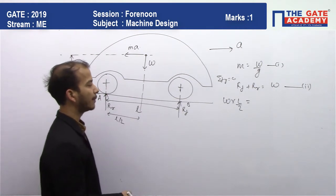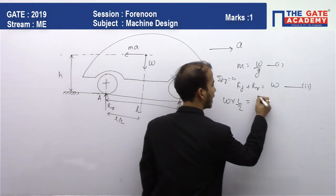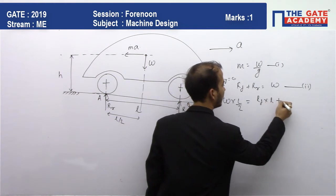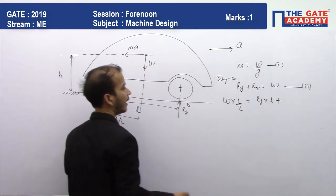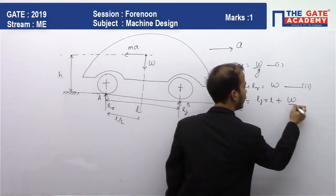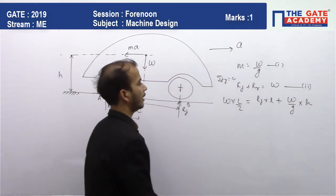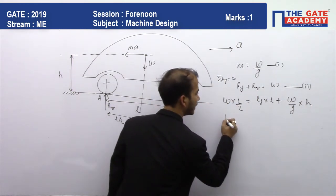Net anti-clockwise torque equals Rf times l plus m, which we'll write as W by g times a times h.